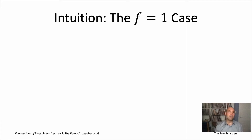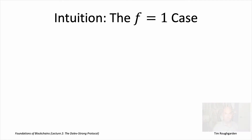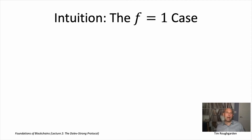What we saw in the last video was that that's actually all we need to solve the SMR problem — state machine replication — in the presence of faults, under our assumptions that we're in the synchronous model with PKI and the permissioned setting. So now it makes sense to turn our focus squarely on designing a fault-tolerant protocol for the Byzantine broadcast problem.